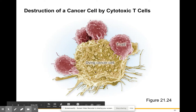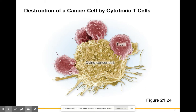Here is an actual electron microscope image of a cancer cell — the yellow cell — surrounded by cytotoxic T cells. You can see these cytotoxic T cells docking with the cancer cell and injecting it with chemicals to stop it from living, killing that cell from the inside out.